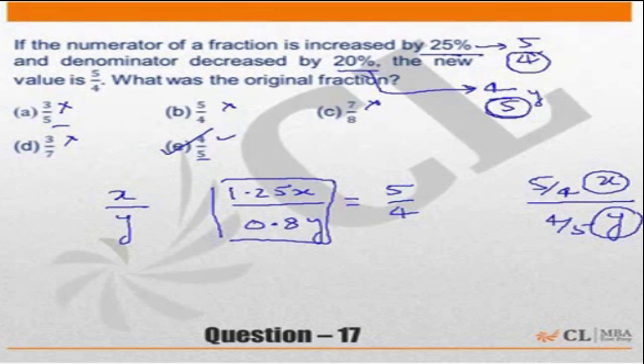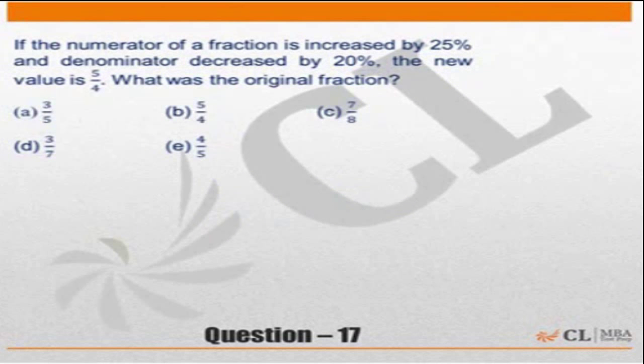Another thing is you could just check the choices in this question. Numerator increased by 25% and denominator decreased by 20%. So if I increase this by 25% the fraction numerator, 25% is one fourth. This will become 3.75 upon 4.